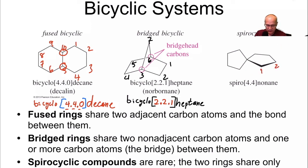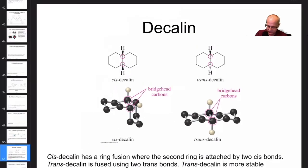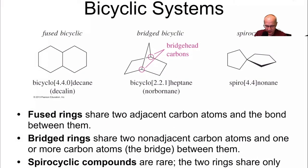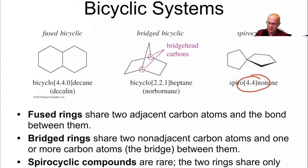Count all carbons: 1, 2, 3, 4, 5, 6, 7, 8, 9 — so this is a nonane. It's a spiro system. The bridgehead is a single carbon. Count around one ring: 1, 2, 3, 4 — that's 4. Count the other ring: also 4. So this is spiro[4.4]nonane. There is no third number required because there's no possibility of carbons between them — they're all connected at the same carbon, which is what makes it spiro.